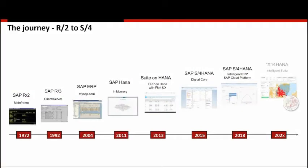A quick recap on where we are with respect to the SAP ERP product line. Walking through the product line over the years gives perspective on where we are compared to where it all started — from R2 in the early 70s, into R3 in the early 90s, and then into the MySAP suite of products in 2004.